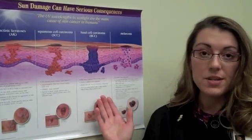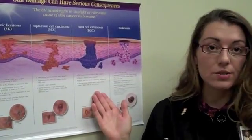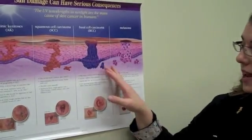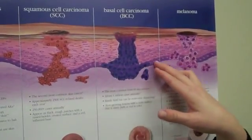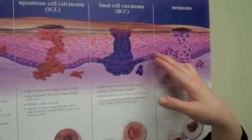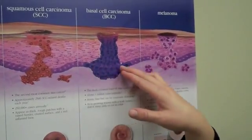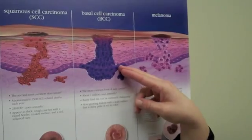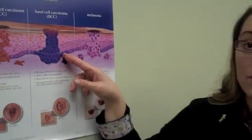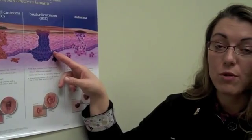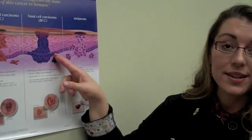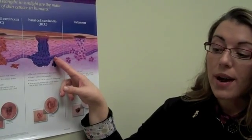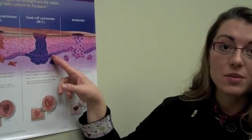The first and most common type of skin cancer is called basal cell carcinoma. This diagram helps you understand a little bit about basal cell. It comes from the cells in this purple layer, which are called the basal skin cells or stem cells. This type is most commonly associated with UV radiation or UV exposure over your lifetime — being out in the sun without proper sun protection. There are about one million new cases diagnosed in the United States every year, and in our practice we see five to ten new cases a week.